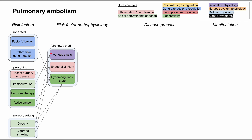In some way or another, these risk factors all contribute to Virchow's triad, which consists of venous stasis, endothelial injury, and the patient being in a hypercoagulable state. The inherited genetic disorders contribute to a hypercoagulable state. Non-provoking passive risk factors like obesity and cigarette smoking contribute fairly equally across Virchow's triad — obesity can cause venous stasis from immobility and also creates a hypercoagulable state due to high estrogen levels. Cigarette smoking is also a high estrogen state, and nicotine and chemicals in cigarettes can directly cause endothelial injury. Recent trauma or surgery is a direct injury to the endothelium, immobilization directly causes venous stasis, and hormone therapy and active cancer both contribute to a hypercoagulable state.